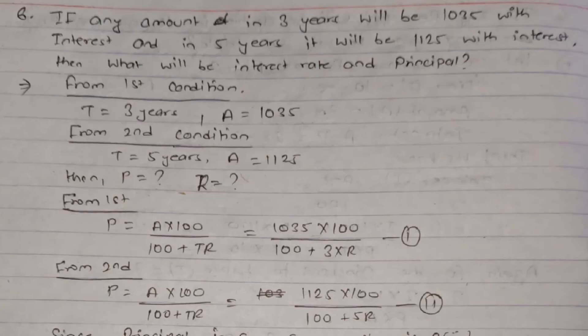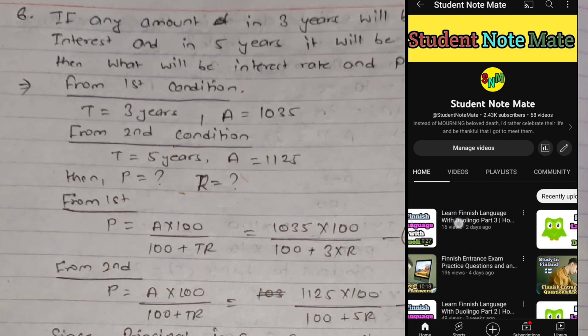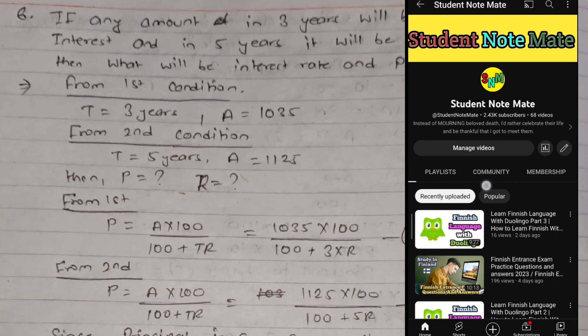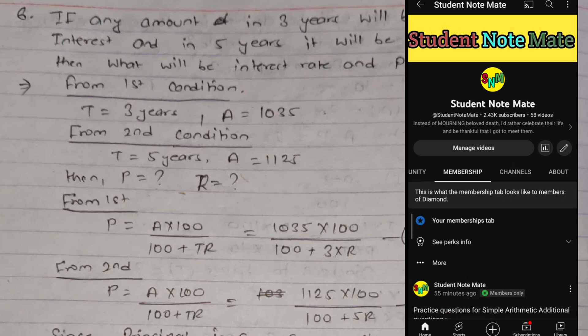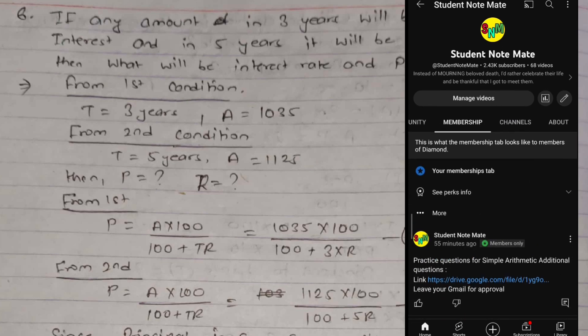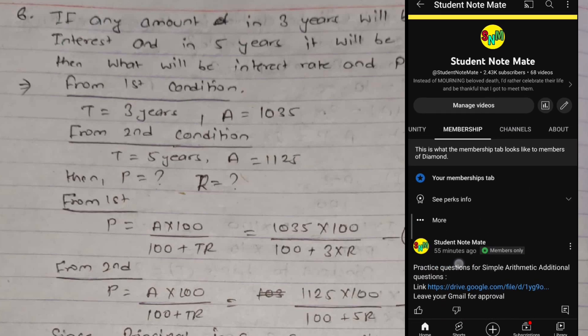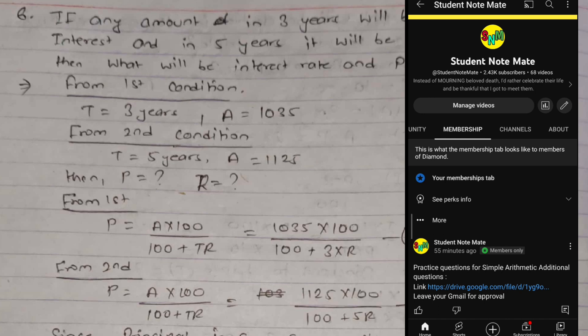Now before jumping into the questions, I would like to announce that this is the final video regarding simple arithmetic. In this video we are going to be practicing a total of 5 questions. If you want further questions, you can visit our community tab where you can find questions available for members of our channel. You have to submit your Gmail ID in the comment section to get approval for the questions in Google Drive — there are a total of 13 additional questions available.